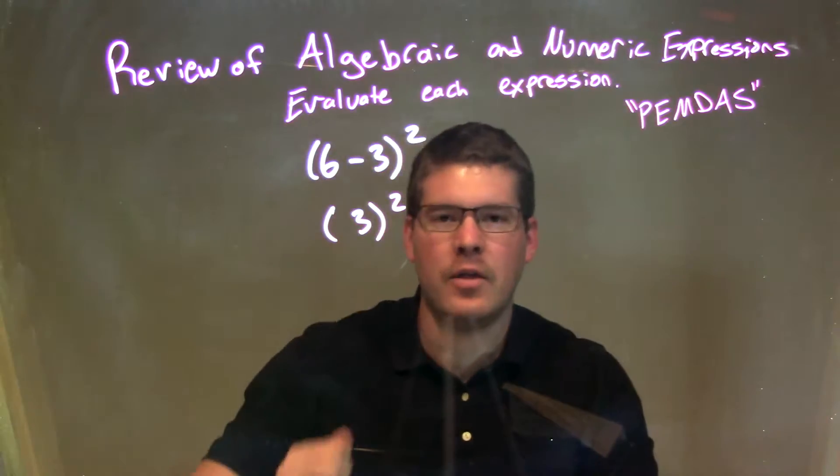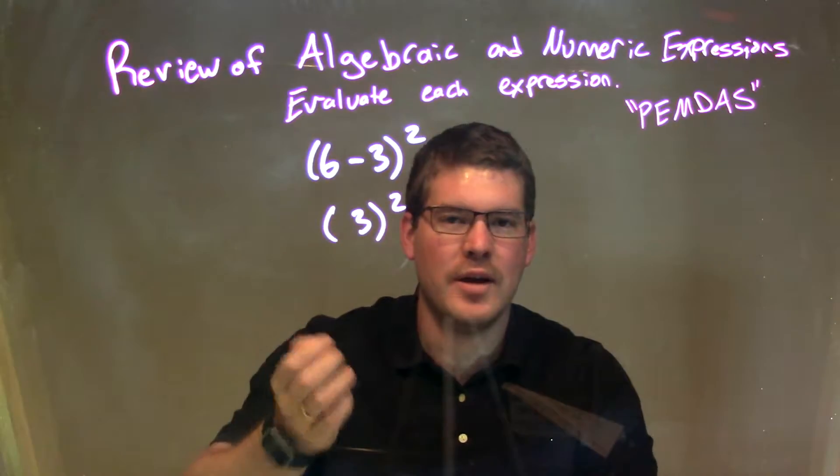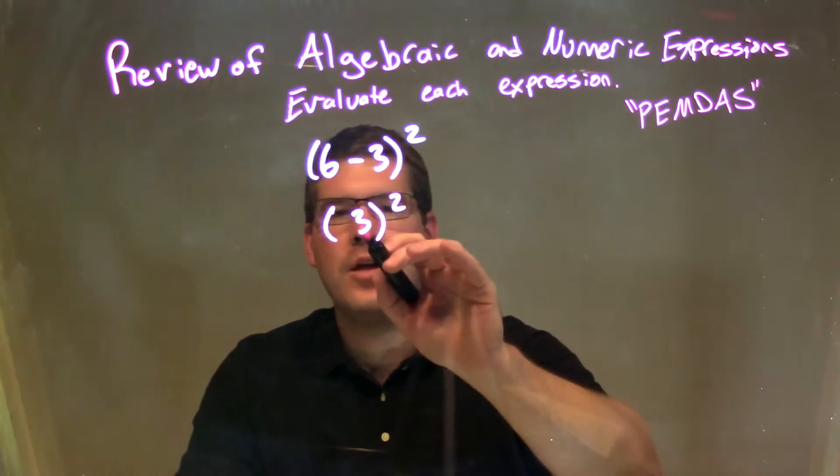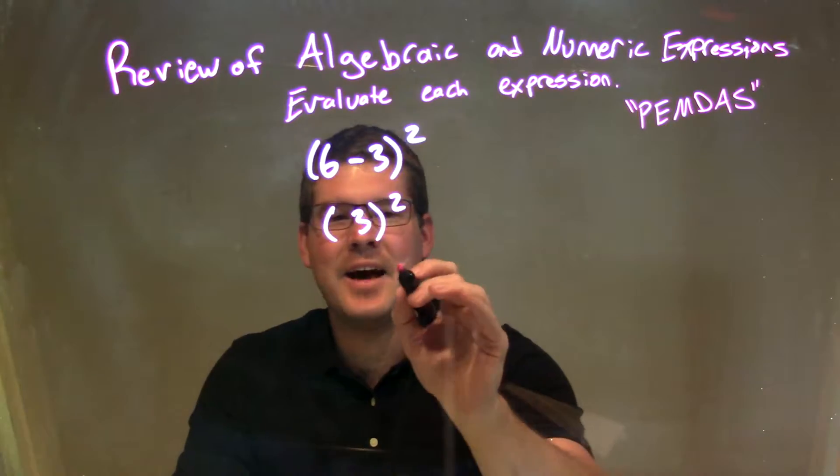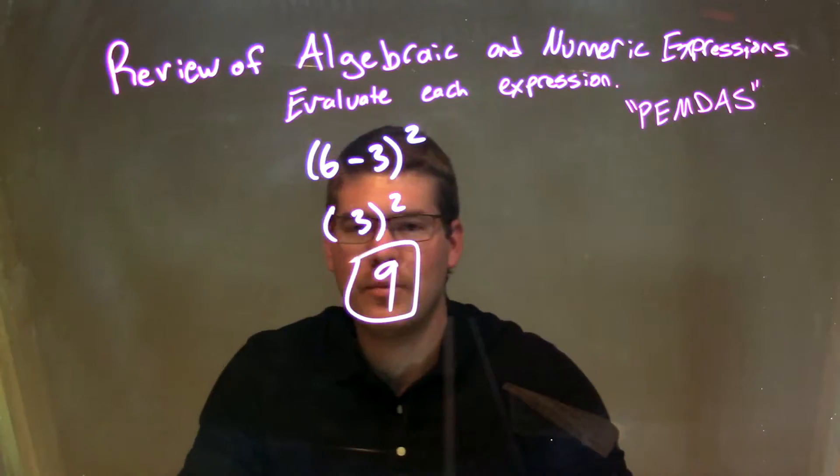So now we have 3 squared. Well, the parentheses really don't matter because there's nothing else on the inside, right, just the 3, nothing to combine there. So we worry about the exponent now, the second part. 3 squared comes out to be 9, and that's it. Our final answer for this problem is just 9.